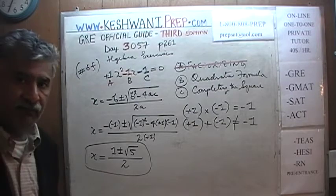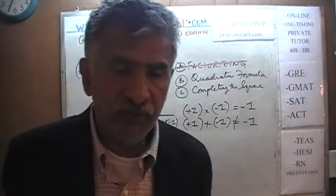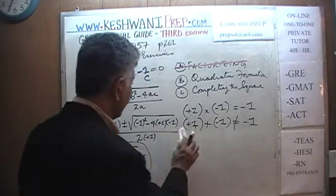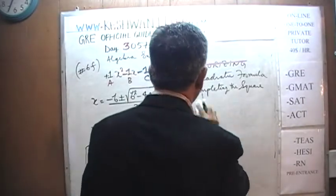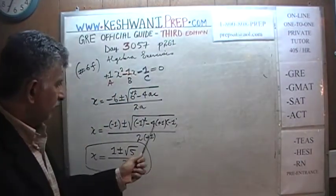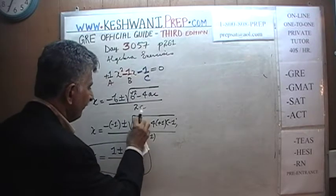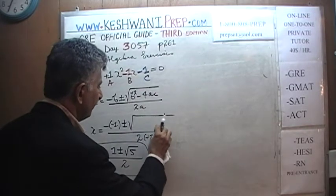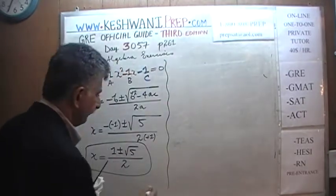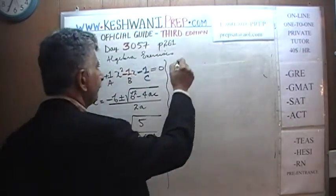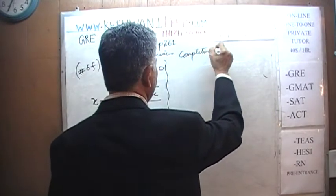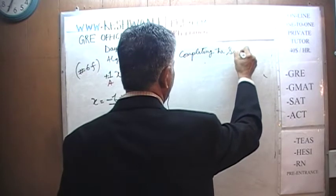Let's see if we can find the same solutions by using the method called completing the square. I'm going to write this simply as square root of 5 so it doesn't stick out so much. Completing the square.